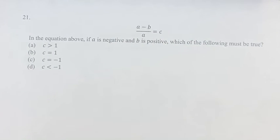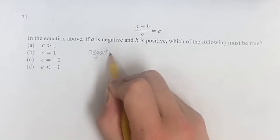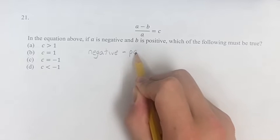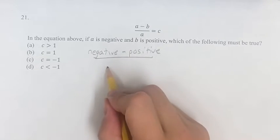So, rewriting this equation to write a as a negative number and b as a positive number, we can say this is a negative minus a positive over a, which is a negative.